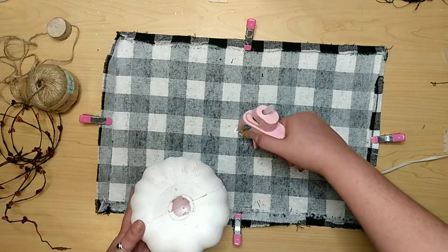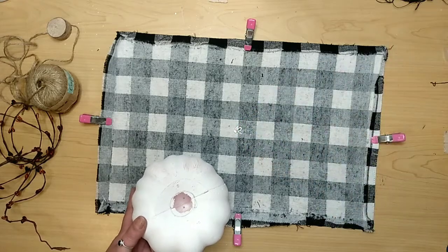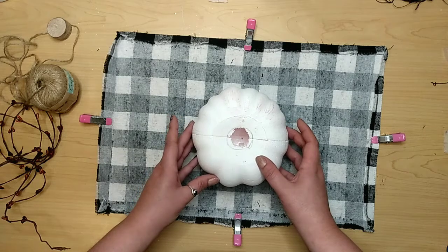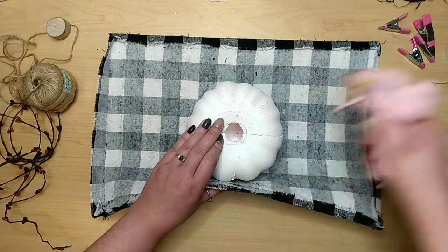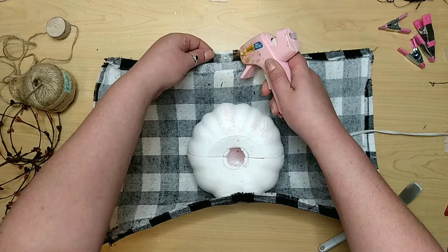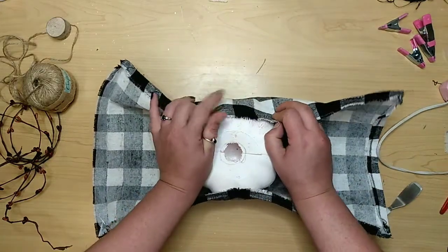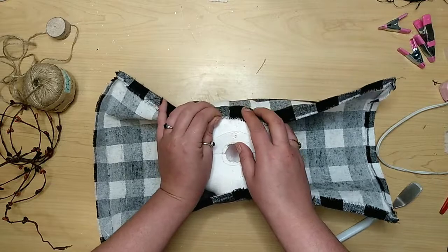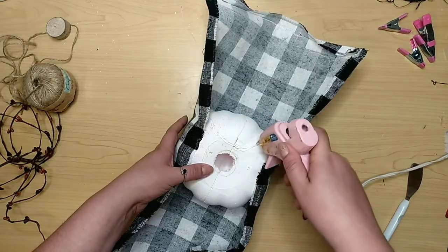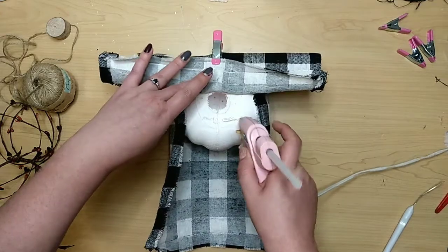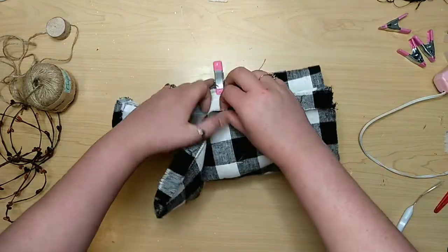You see how I have those clips placed? Those are marking the very center of my fabric. I'm gonna put a little hot glue in the middle and place down my pumpkin so it doesn't move around. I start covering it by gluing down the short edges first, that way I know those are covering as much as they possibly can. Then we go to the long sides, pulling them nice and tight, gluing as we go.